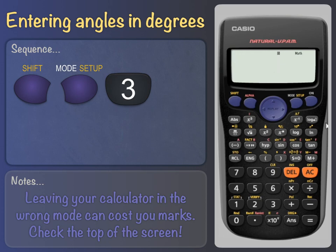If however, you want to enter angles in radians, say in maths or as we do in advanced higher physics, press Shift Setup 4. A small letter R will now appear at the top of the screen. Just make sure you're aware which mode your calculator's in. When you reset it, it will default to degrees.